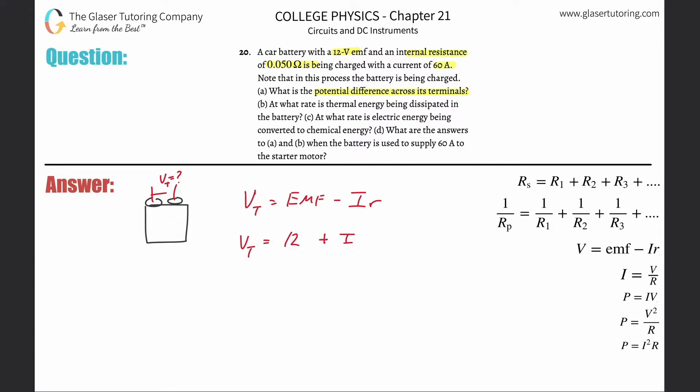So now plus then the current, which was 60 amps, multiplied then by the internal resistance, 0.05. Now consider, take a look at the other problems like I was mentioning. I solved it differently, but I'm just showing you a different flavor now. So 12 times 60 times 0.05.